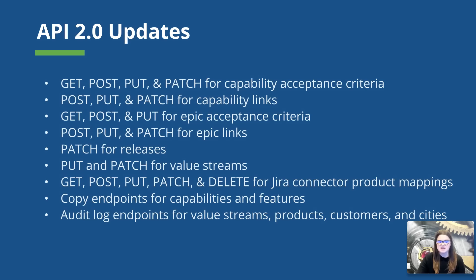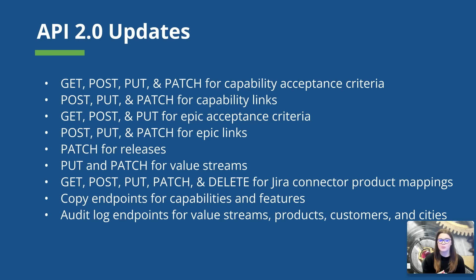Atlassian is continuing their efforts to ensure consistency in their API coverage. We are going to see the following methods on the slide here with this release, including some new audit log endpoints for value streams, products, customers, and cities.